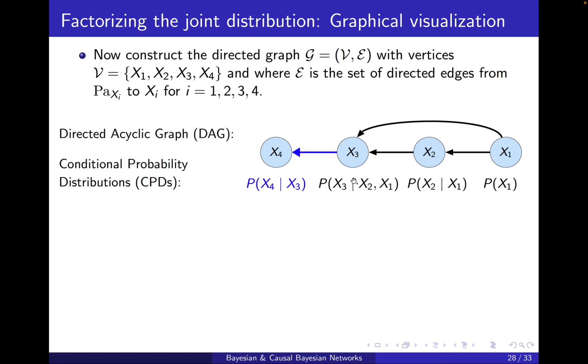Then for x3, it was conditioned on x1 and x2, so we'll have one link from x2 to x3 and another from x1 to x3. x2 was conditioned only on x1, so we'll have this link. And x1 didn't have any parents, so I will just leave it there.